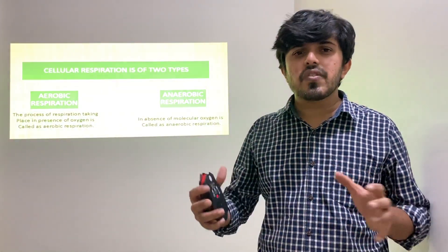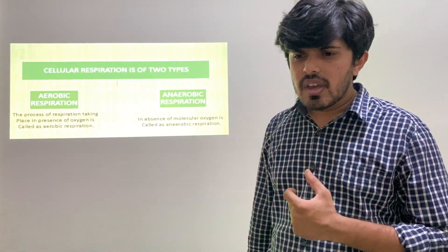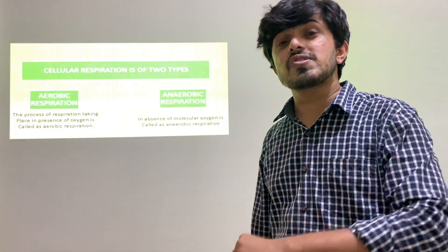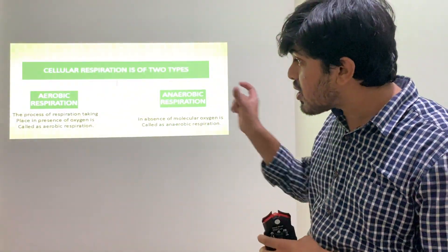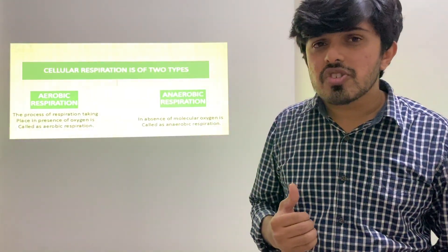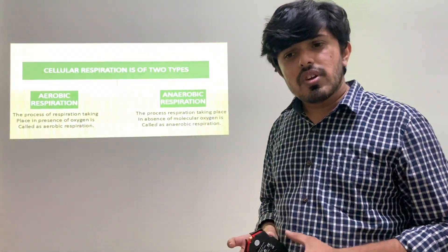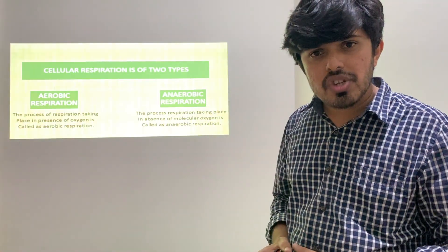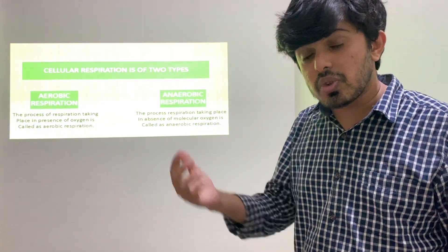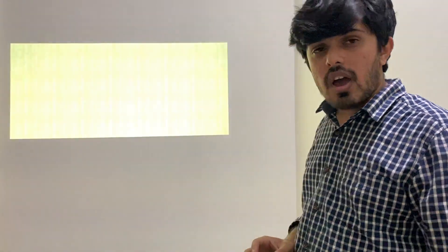Cellular respiration is again classified into two types. One is aerobic respiration and the other is anaerobic respiration. The process of respiration which involves molecular oxygen is called aerobic respiration. The process which does not involve molecular oxygen is called anaerobic respiration. Anaerobic respiration is involved in fermentation and alcohol formation, which we will study further. So: oxygen present — aerobic; oxygen absent — anaerobic.